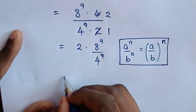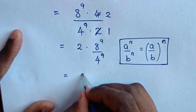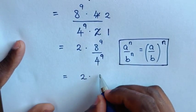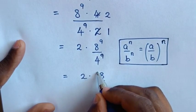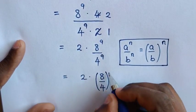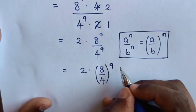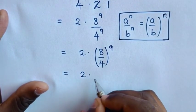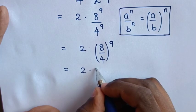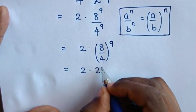Then this will be equal to 2 times base of 8 over base of 4 bracket power of common power of 9. So this will be equal to 2 times 8 divided by 4 is 2 power of 9.